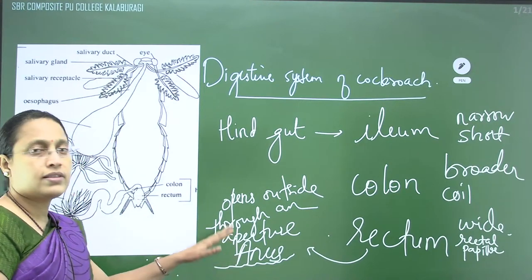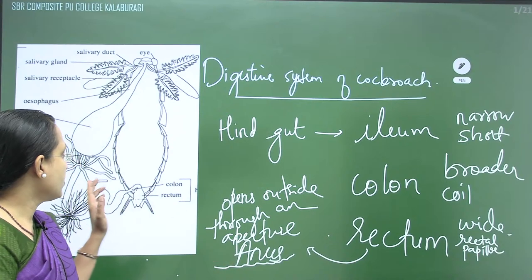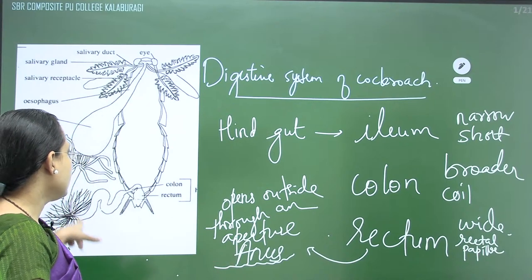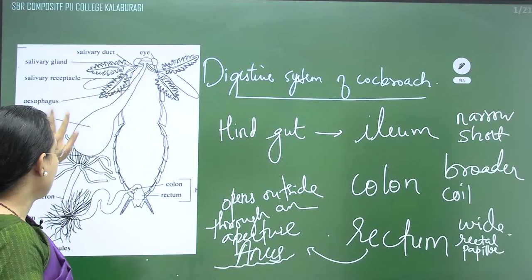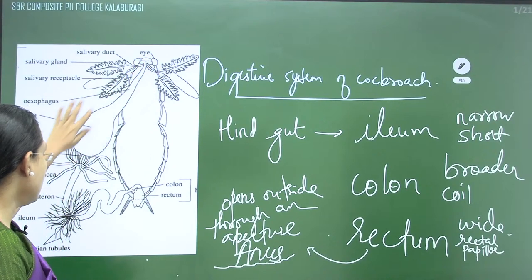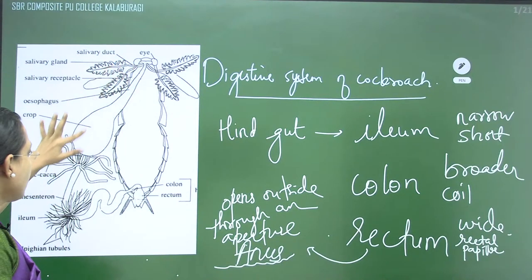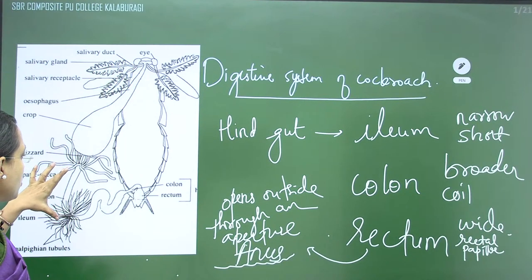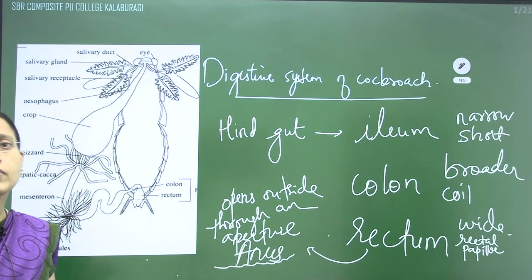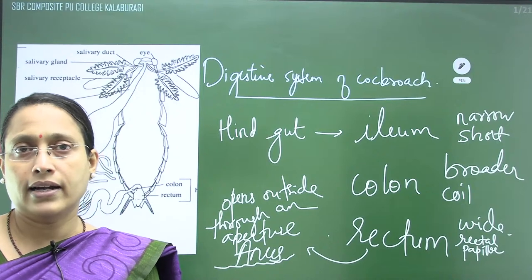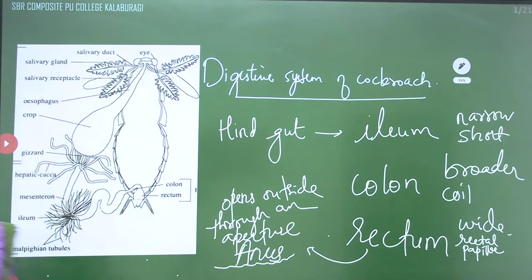The anus is the aperture that opens at the last abdominal segment. This was about the digestive system of cockroach — holozoic nutrition, physical and enzymatic digestion partly in the foregut, most digestion and absorption in the midgut, and undigested food passed through the hindgut to outside the body.